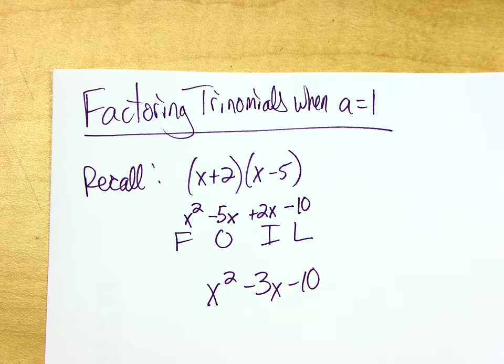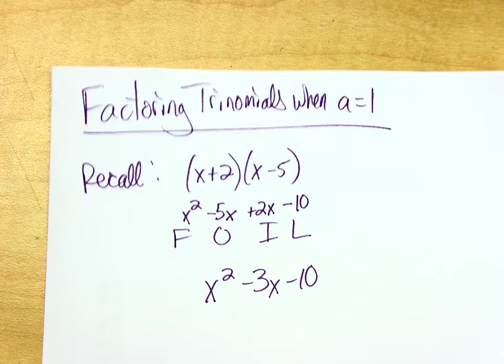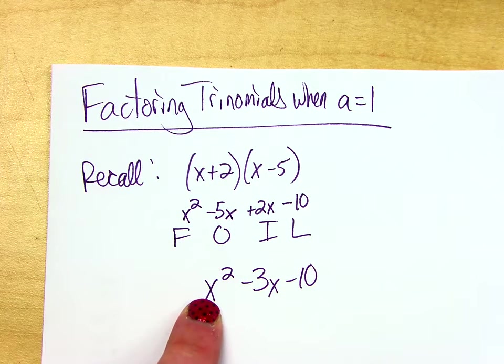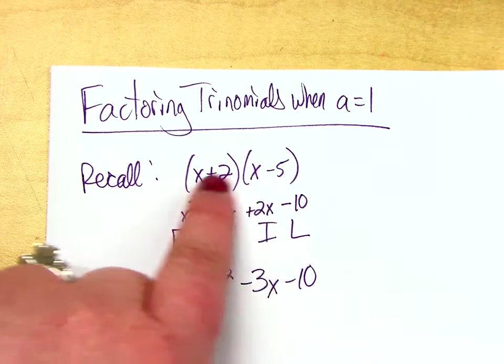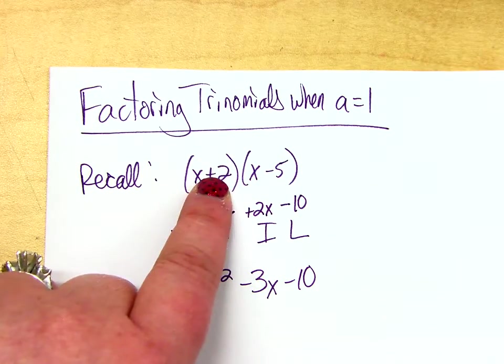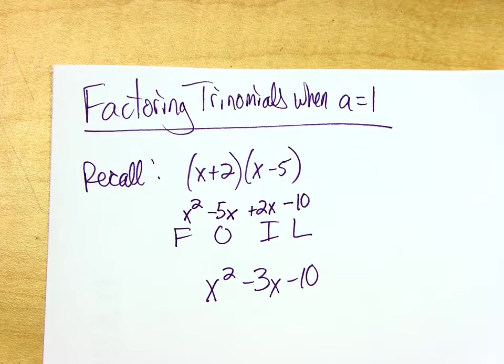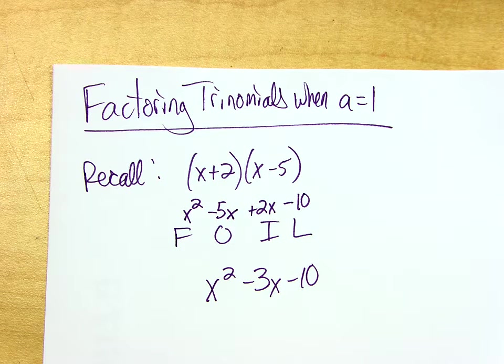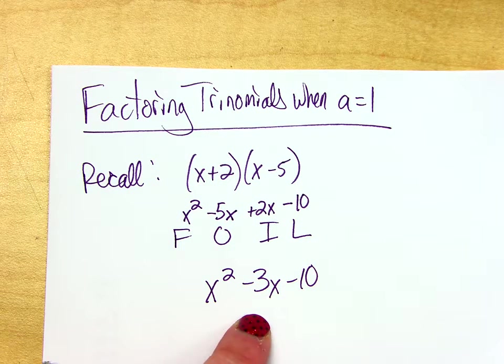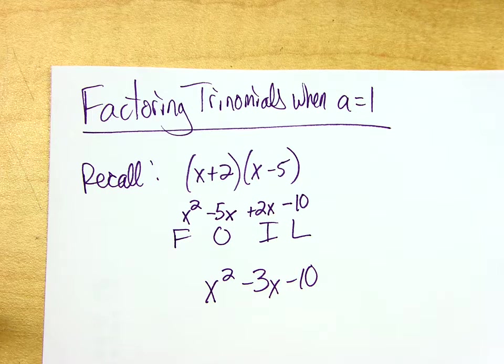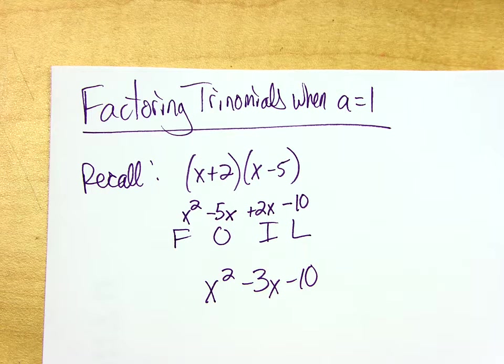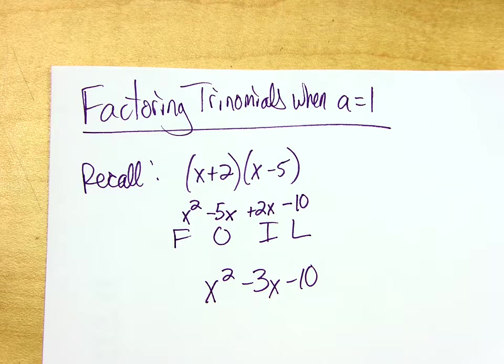Today what we are going to be doing is going the other way. I'm going to give you the trinomial, and we're going to figure out how to get back to these. Remember what factors are. It's just two things that you multiply together to get a bigger number, right? So like factors of 10, 2 times 5.